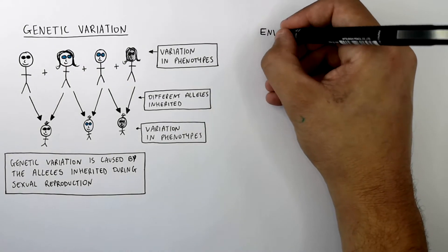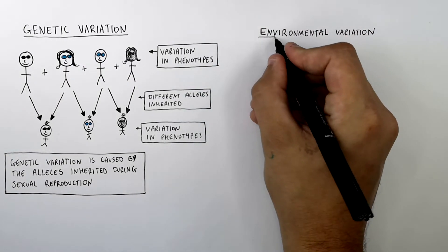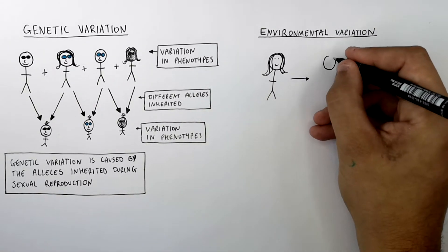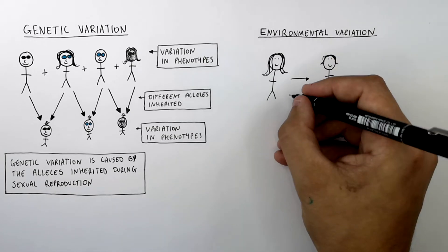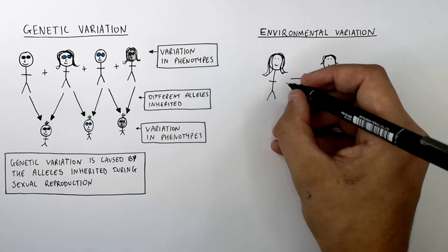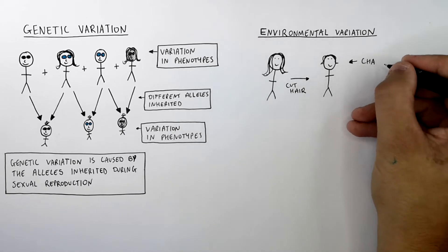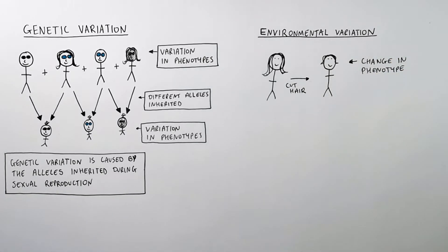So what is environmental variation? This is a woman with long hair. The woman cuts her hair so it's shorter. She's changed the characteristic of her hair by cutting it. This is a change in phenotype of the woman. The characteristic of her hair has changed, but this is not due to genetics — it is caused by the surroundings within the environment.